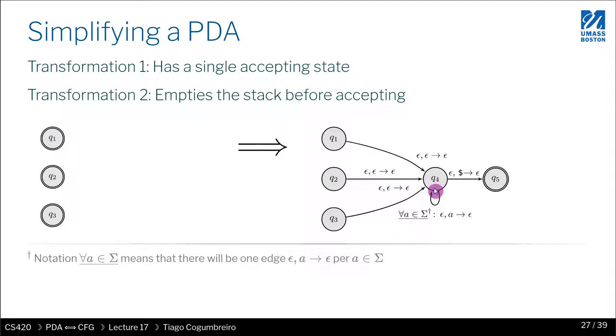So you do all of that in Q4. And then you draw a transition from Q4 to a new state. Let's call it Q5, which is the new and only accepting state. And you connect from Q4 to Q5, and you just pop the dollar sign just to make sure you've accepted the string.